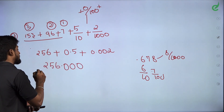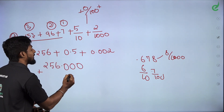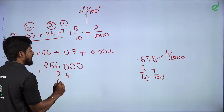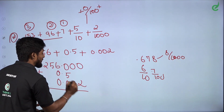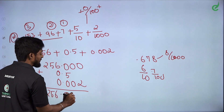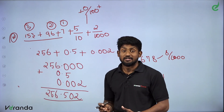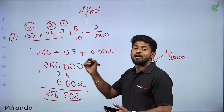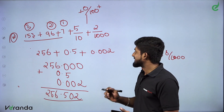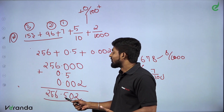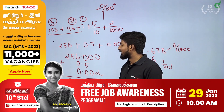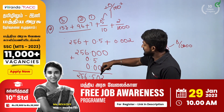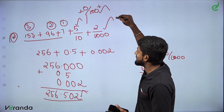We will add 256.000 plus 0.5 plus 0.002 to get 256.502. So we will answer 256.502 — that is the answer according to the decimal point.